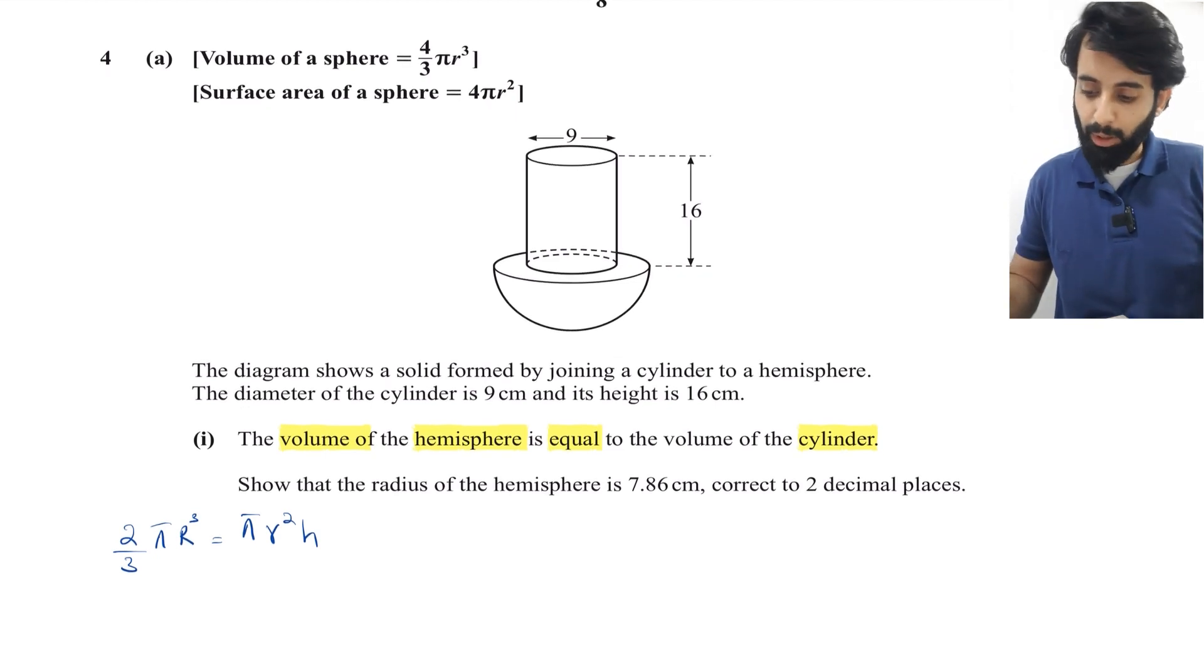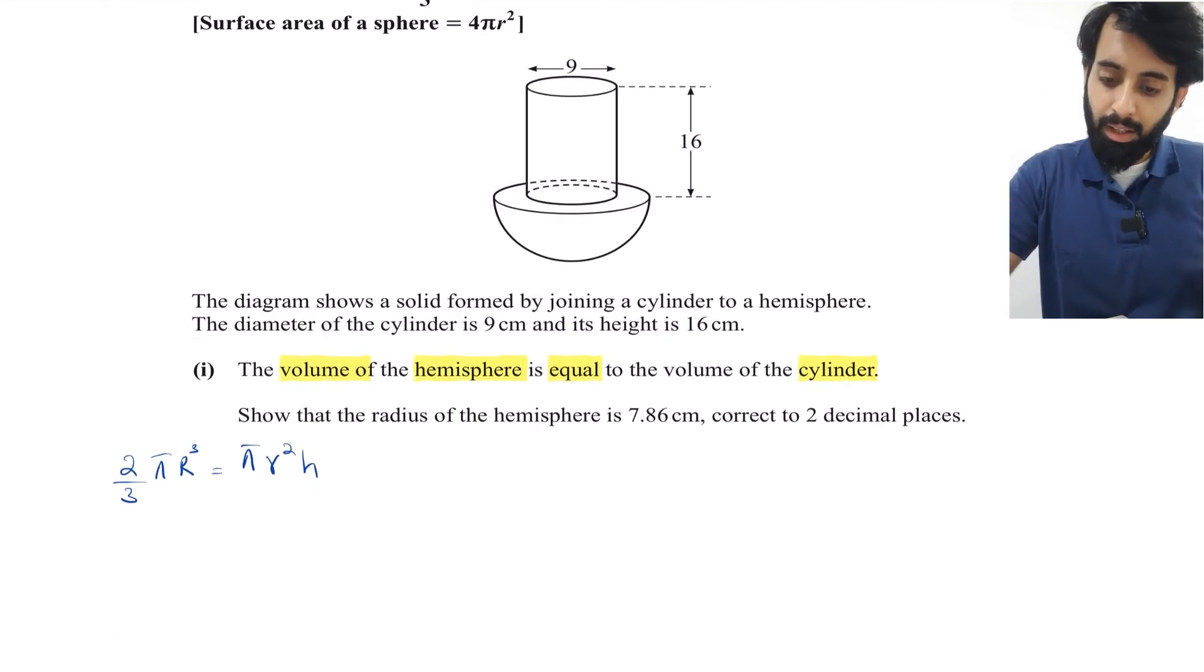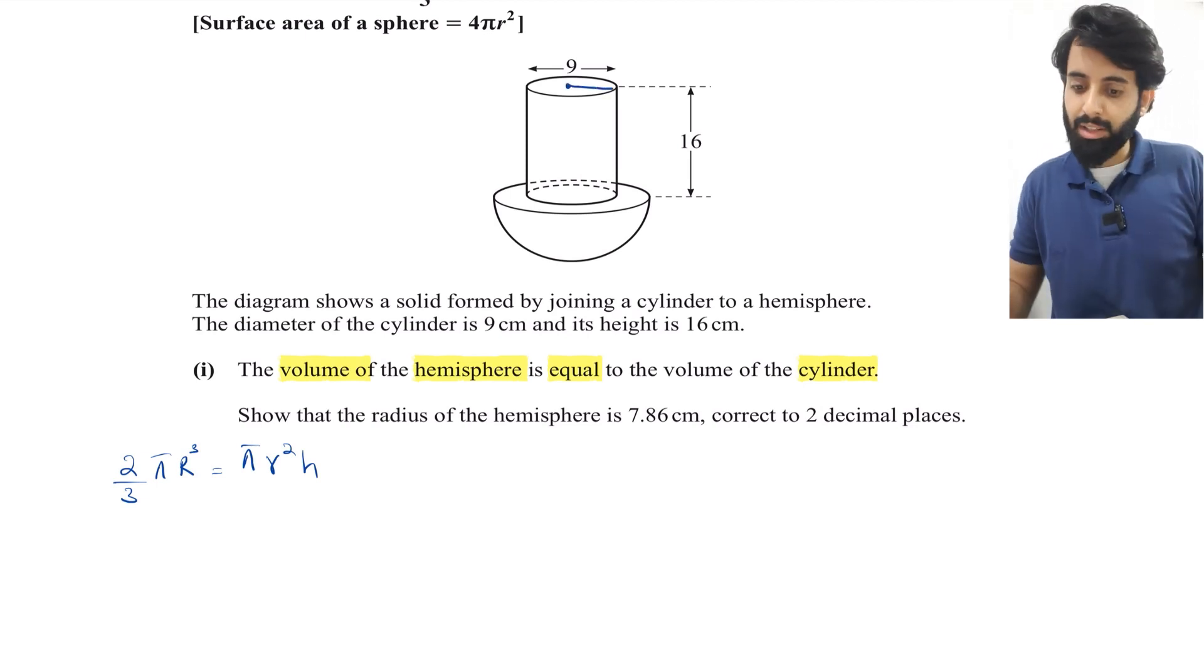This is the equation we're going to use to show that the radius of the hemisphere is 7.86 cm. The radius of the cylinder is 4.5 cm - don't fall for that trap, the diameter is 9, so the radius is half. So π(4.5)² × 16 equals (2/3)πR³.